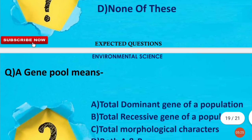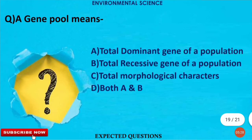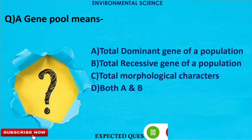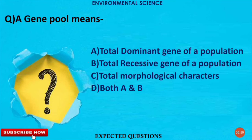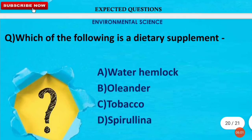Moving to the next question: gene pool means what? The correct option is D — gene pool means the total genes of a population. It includes both dominant and recessive genes, so all together all alleles form the gene pool of a population.